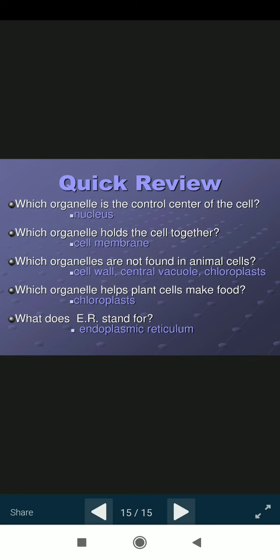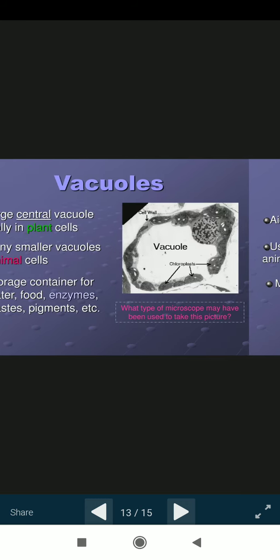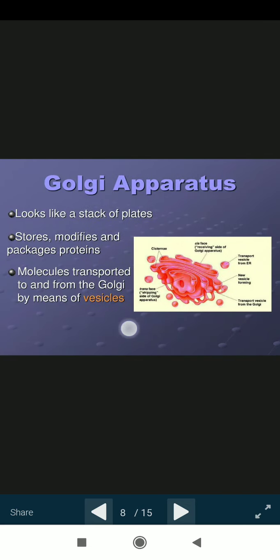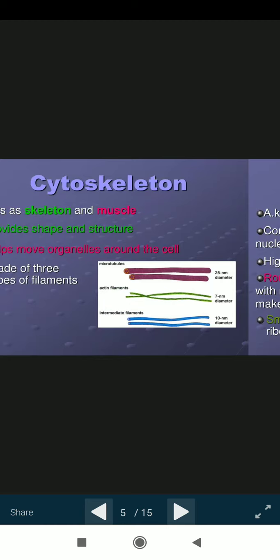Then centrioles. Aids in the cell division. Usually found only in animal cells. Made of microtubules. This is the topic we have studied here: the cell organelles. Thank you.